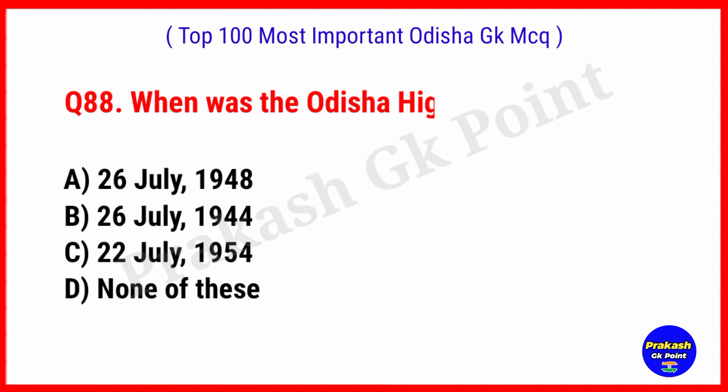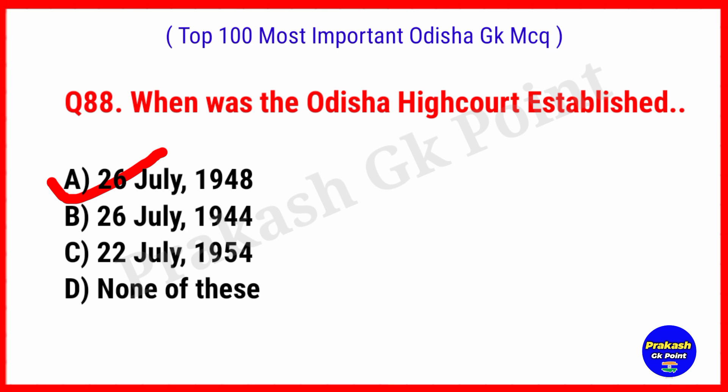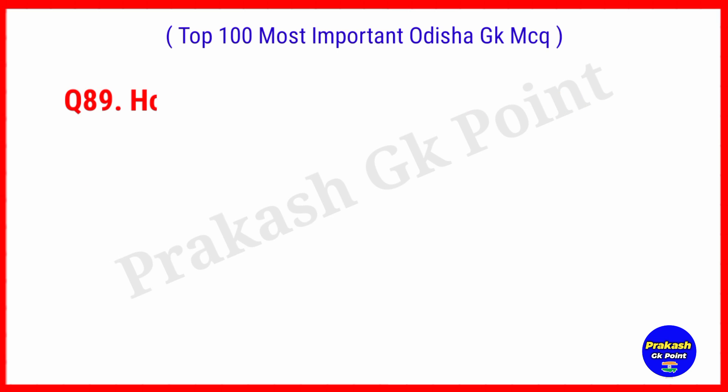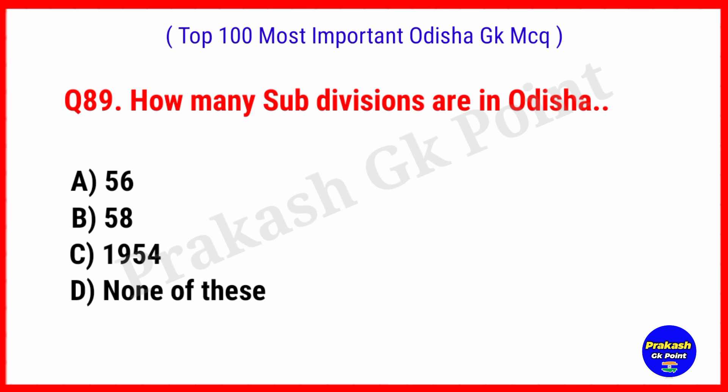When was the Odisha High Court established? Answer: Option B, 26 July 1948. How many subdivisions are in Odisha at present? Answer: Option B, 58.